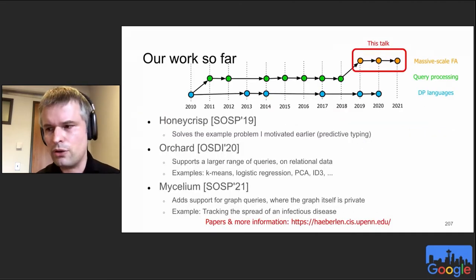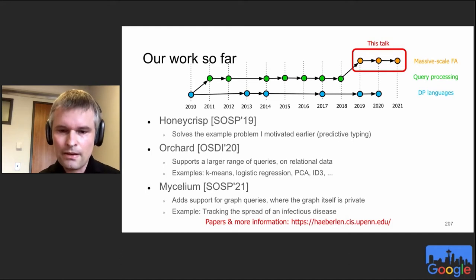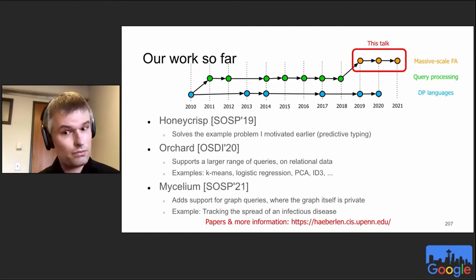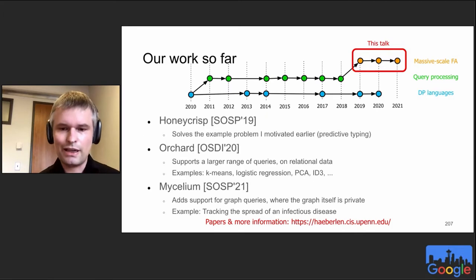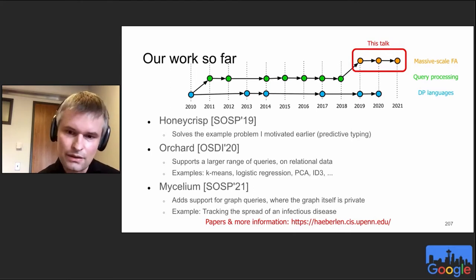We've been working in this space for a while — looking at query languages for differential privacy, query processing solutions. More recently we've tried to find solutions for this scenario. The first system we came up with is called Honeycrisp, published at SOSP two years ago, a point solution for the predictive typing problem. A year later, we came up with Orchard, which supports an entire range of queries — it has a query language where you write what you want to know and it answers that. We can do queries like means, logistic regression, PCA, and so on.